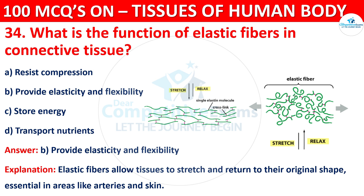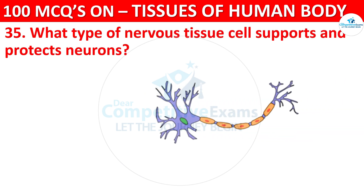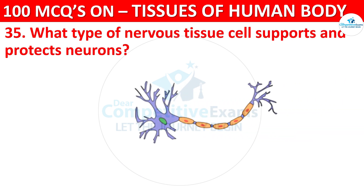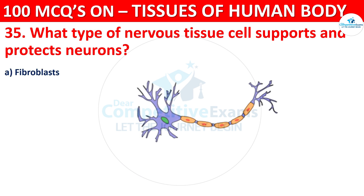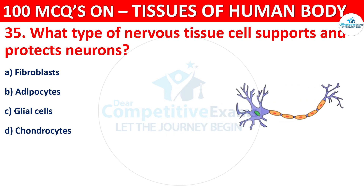Question number 35. What type of nervous tissue cell supports and protects neurons? Options are Fibroblast, Adipocyte, Glial Cells, or Chondrocyte.